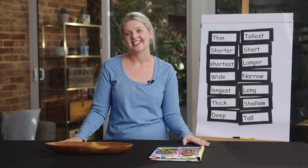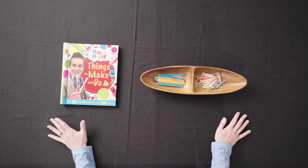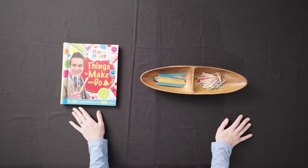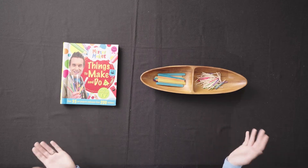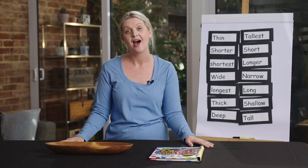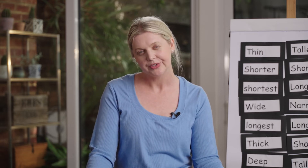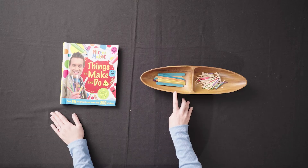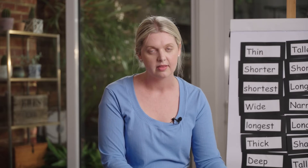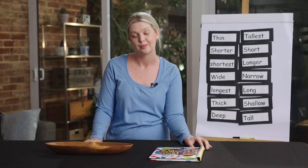Today we are going to practice using informal measuring tools. I have a book. We know that if we're looking at the attribute of length, we could measure how wide it is or how long the book is. I think we'll measure the width, or how wide the book is. We are going to choose a unit of measure — what do you think would be more appropriate, pop sticks or match sticks? Because we're measuring the width, I'm going to use match sticks because they're smaller and it might help me to be more accurate.